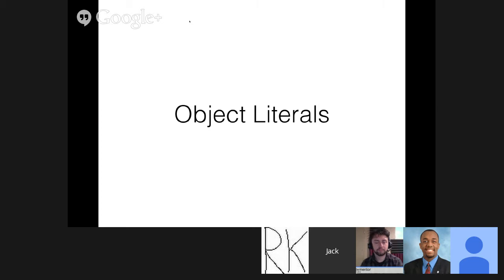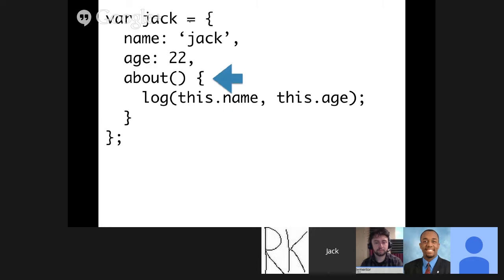Moving on to object literals — I showed you the new way of defining functions in classes, and we have that in object literals too. There's no longer any need to write 'about: function() {}'. You just omit that middle function keyword and just type 'about'. Again, just slimming down a bit. There are a ton of big features in ES6 and a ton of small ones — like this — that I think will make quite a big difference when writing the language. It's a nicer developer experience, and this works exactly as you would expect.